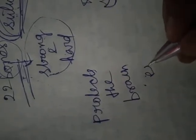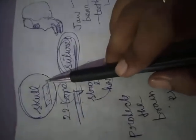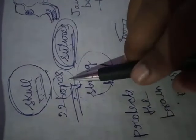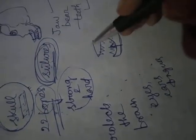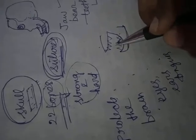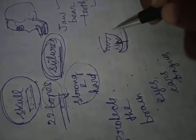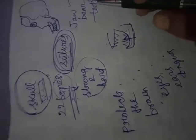The skull also protects the brain. The skull is made up of strong and hard bones, that's why it protects the brain. It also holds the eyes, ears, and tongue. So the function of the skull: it is the uppermost portion of the human skeleton system, made up of 22 strong and hard bones. The upper jaw and lower jaw are also part of the skull; both bear teeth, and the lower jaw is movable so we can eat and talk.